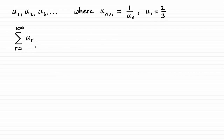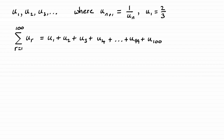So this sum represents u1 plus u2 plus u3 and so on, all the way up to u100. Starting to fill this in: u1, being the first term, is two thirds. Then u2, using this result, is one divided by u1, so we've got plus one divided by two thirds.